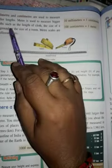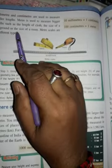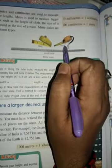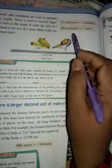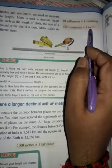Meters are used to measure larger lengths such as the length of cloth, the size of a playground, and the size of a room. Meter scales come in different types: fabric, metal, and wooden. 10 millimeters equals 1 centimeter, and 100 centimeters equals 1 meter.